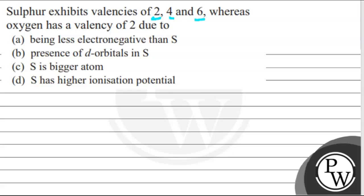whereas oxygen has a valency of 2 due to option A being less electronegative than S, option B presence of d orbitals in S, option C S is bigger atom, and option D S has higher ionization potential.